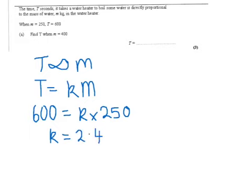So if our constant is 2.4, we substitute that back in to get our new equation, which will be t equals 2.4, our constant, multiplied by m.